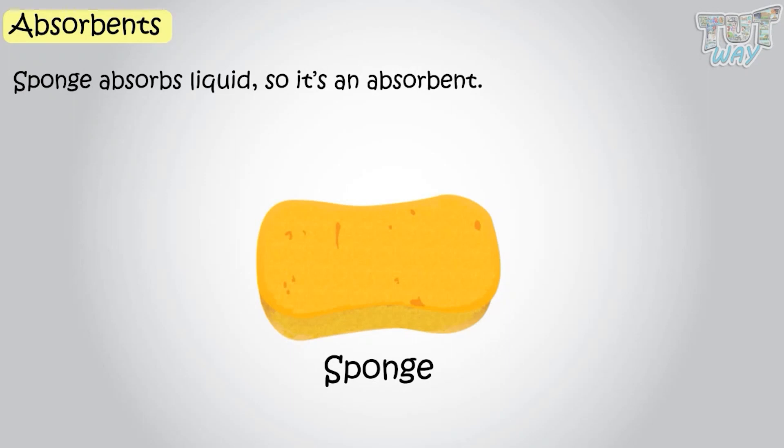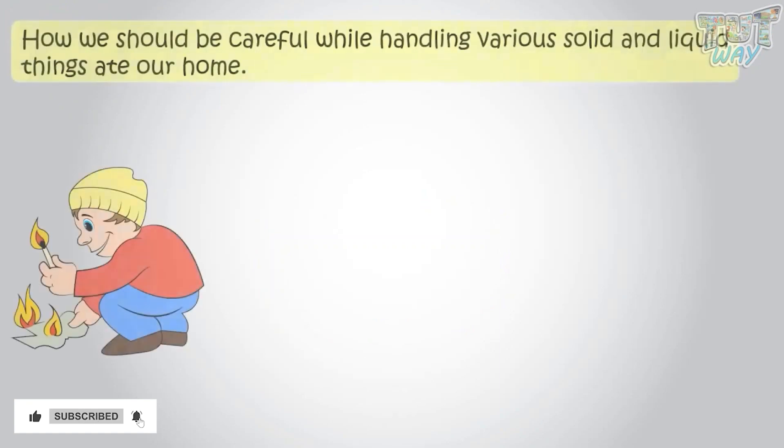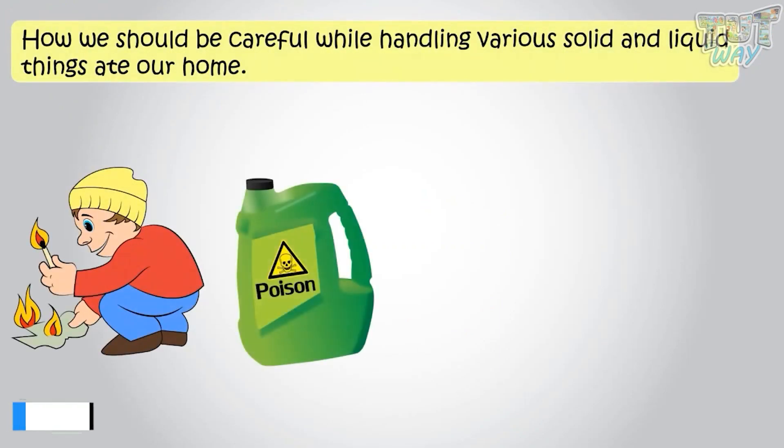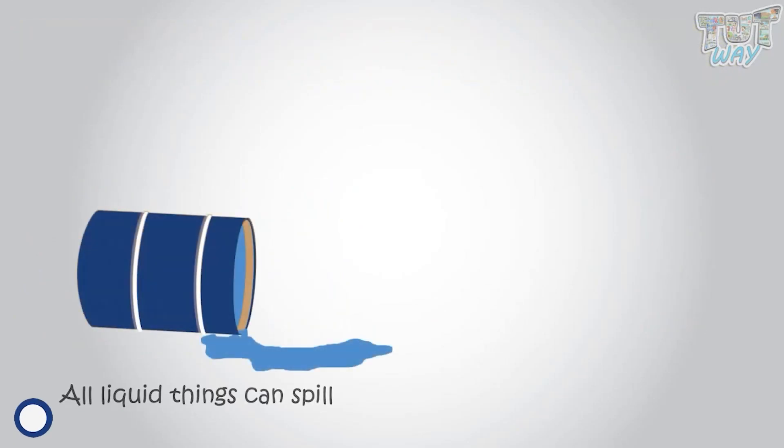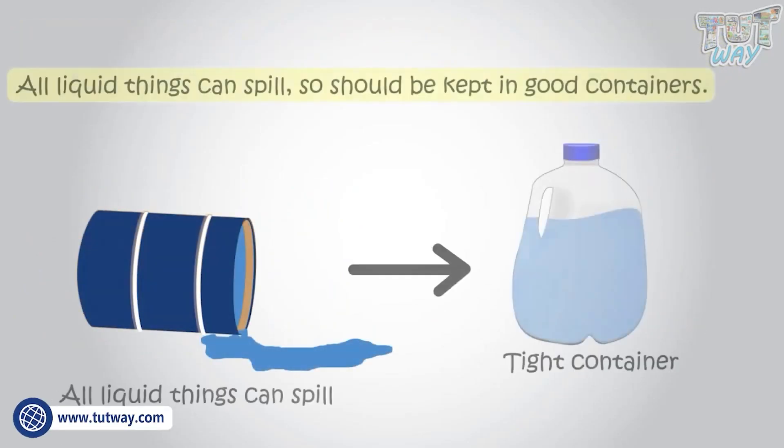Kids, now we will learn how we should be careful while handling different solid and liquid things at our home. Let's learn. First of all, all liquid things can spill. So all liquid things need good containers that prevent them from spilling or leaking.